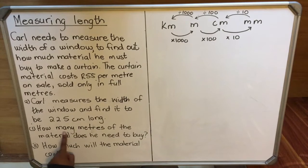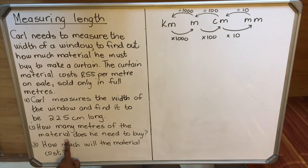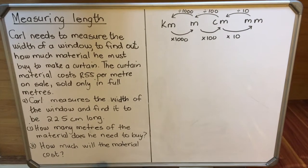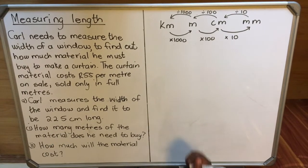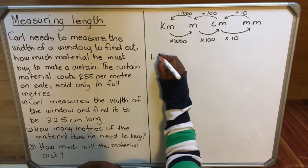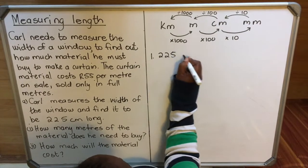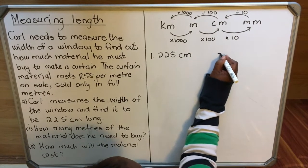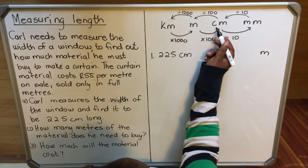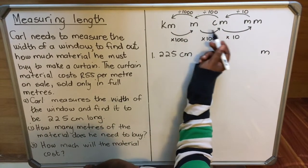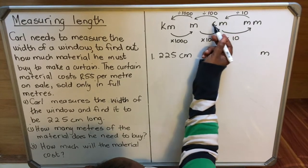The first question was how many meters of material does he need to buy. But when he measured, he used centimeters not meters. So we need to convert these centimeters to meters first. 225 centimeters, we're going to convert them to meters. Now we can go to our table. Centimeters going to meters, where centimeters are smaller than meters, then we're going to divide by 100.